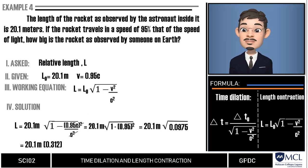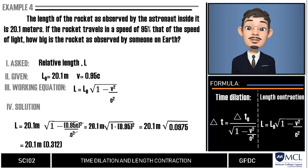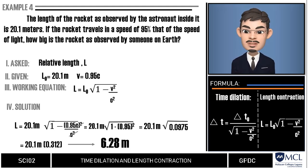Finally, we will multiply this value to 20.1 meters and the final answer would be 6.28 meters. We can conclude from this equation that the rocket is only 6.28 meters long as seen by someone on Earth.